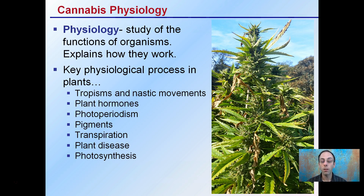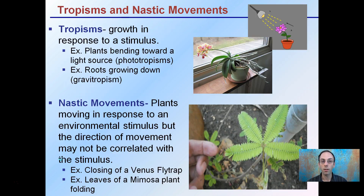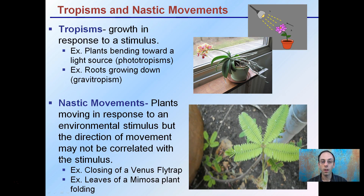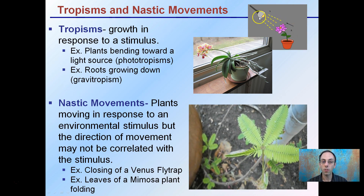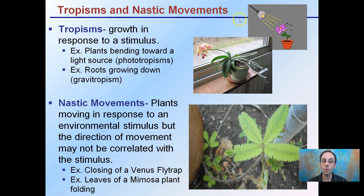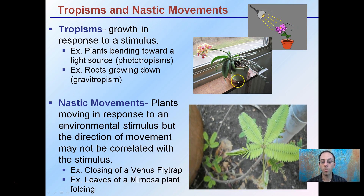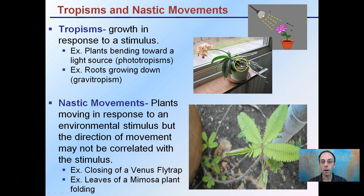Some key physiological processes in plants include tropisms and nastic movements, hormones, photoperiodism, pigments, transpiration, plant diseases, and the very important photosynthetic process. Tropisms are growth in response to a stimulus — for example, a plant bending towards a light source is a phototropism, and roots growing down is a gravitotropism, which is the plant responding to gravity.